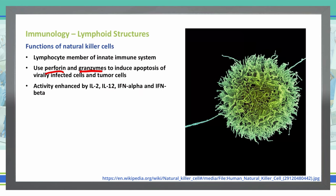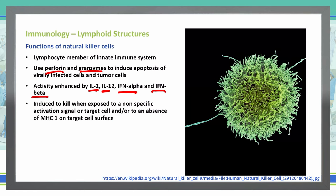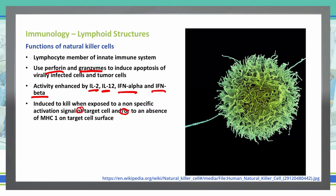Specifically with natural killer cells, their activity is enhanced by IL-2, IL-12, interferon alpha, and interferon beta. So how do they work? They activate themselves to kill when they are exposed to non-specific activation signals, or to target cells, and or to an absence of the major histocompatibility complex 1, or MHC-1, on our target cell surface.